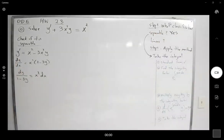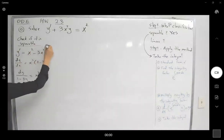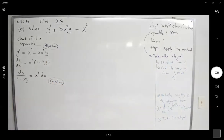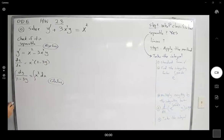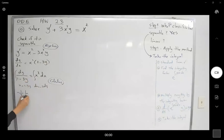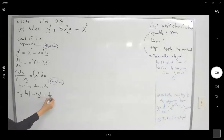Now the calculus part. To evaluate the left side, use substitution: let u equal 1 minus 3y, so du equals negative 3 dy, meaning dy equals du over negative 3. We get negative one-third times ln of the absolute value of 1 minus 3y. On the right-hand side, we have one-third x cubed plus the constant of integration.